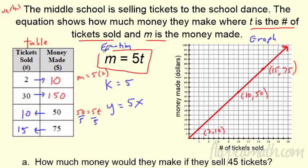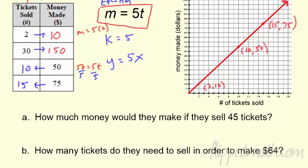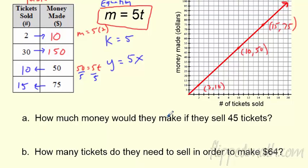So there is a graph of this equation. So really, we just graph this equation. We use the table to help us do it, but really the equation makes this graph. That is so awesome. Can we answer questions? Sure. This is from like the last section. How much money would they make if they sell 45 tickets?